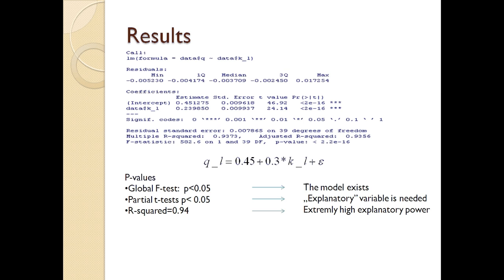There are also a lot of useful information in that summary table. For example, we can see the results of the global F-test that answers the question whether the model exists at all. Its null hypothesis is that our model doesn't exist.